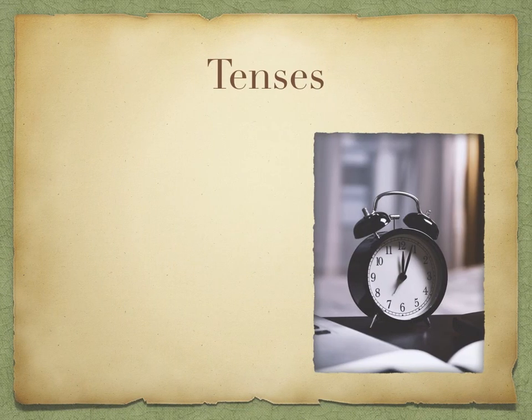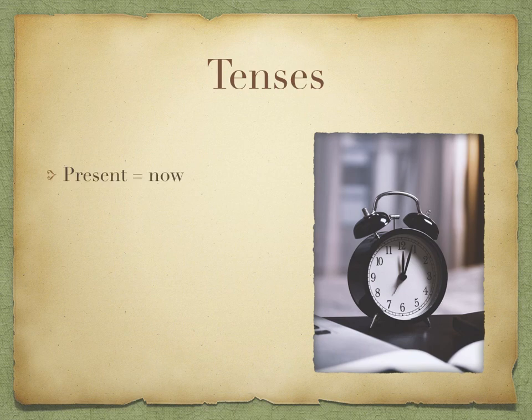Tenses tell us when a verb is being done, and we've met three different tenses so far in Latin. The first is the present tense, which is used to describe an action happening now. So if we take the verb 'eat' for example, we can say 'I eat', 'I am eating', or 'I do eat' — those are all in the present tense, happening now.